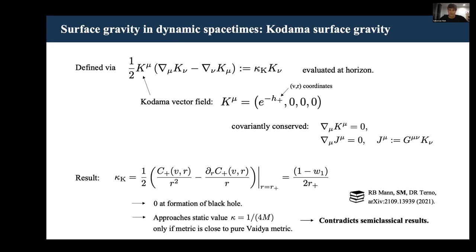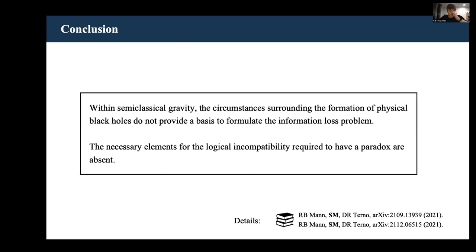Now to wrap things up, what does that leave us with? Well, it looks like that when the first two elements that we need to formulate the paradox are realized, then we cannot have the third one because if the Hawking temperature is proportional to the peeling surface gravity,